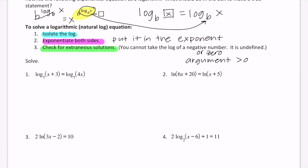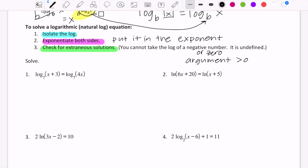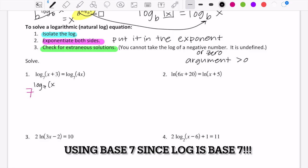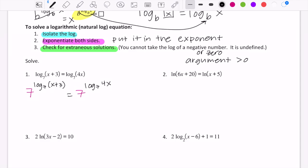Let's take a look at the first equation: log base 7 of (x + 3) equals log base 7 of (4x). We undo a logarithm with an exponential, so we exponentiate both sides with base 7. Since base 7 exponential and log base 7 are inverses, they undo each other. On the left we're left with x + 3, and on the right we're left with 4x. Then we solve normally.